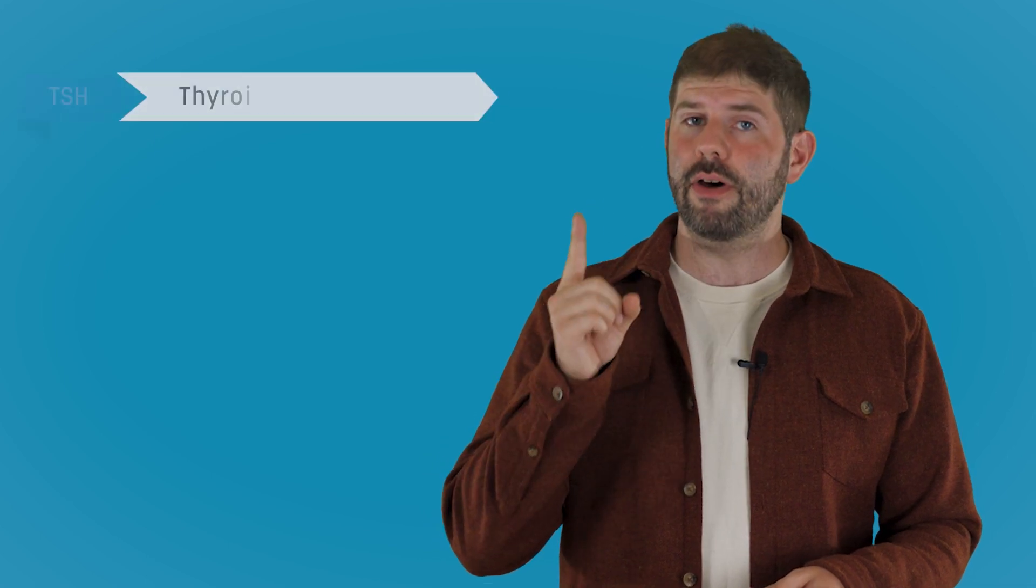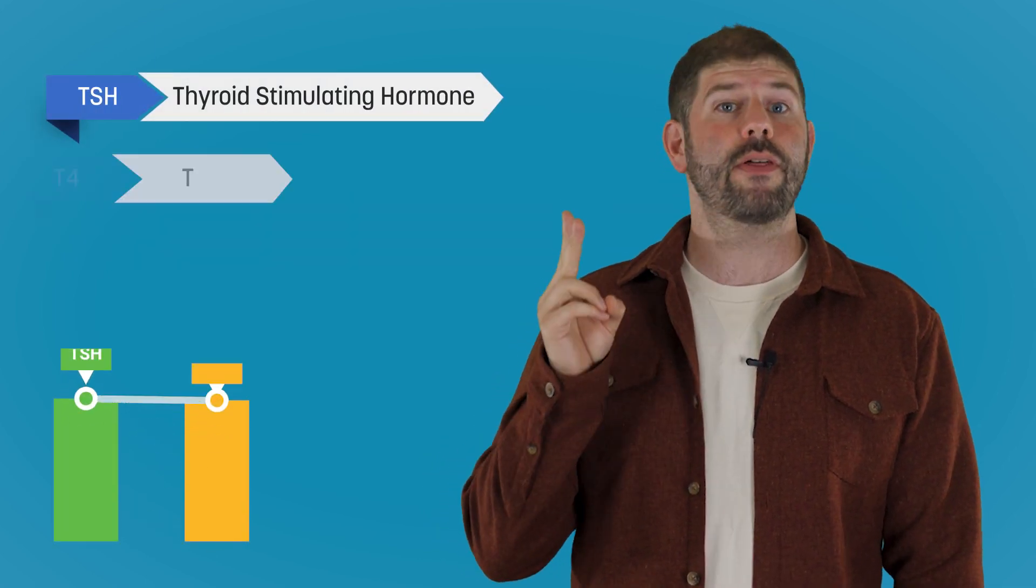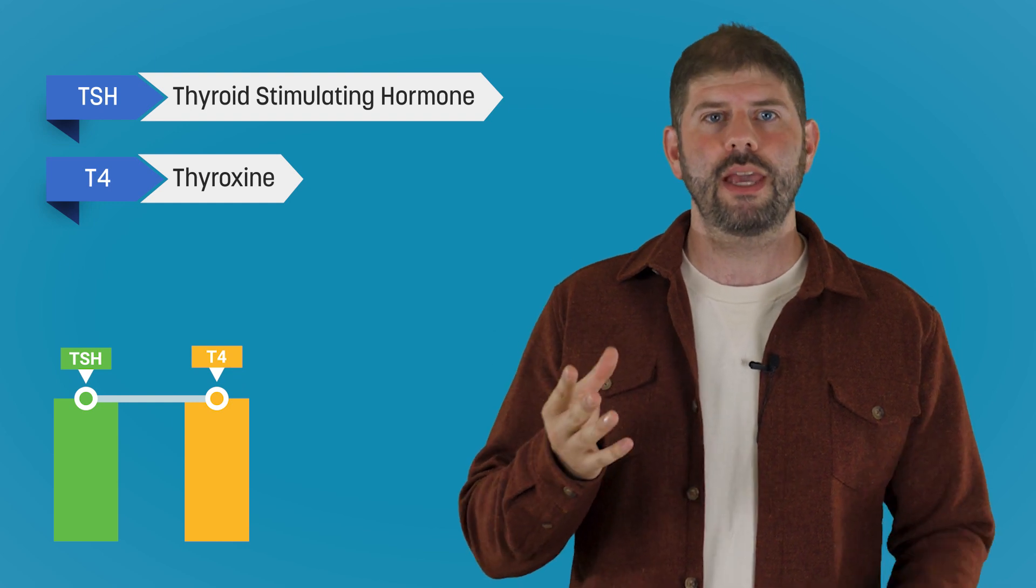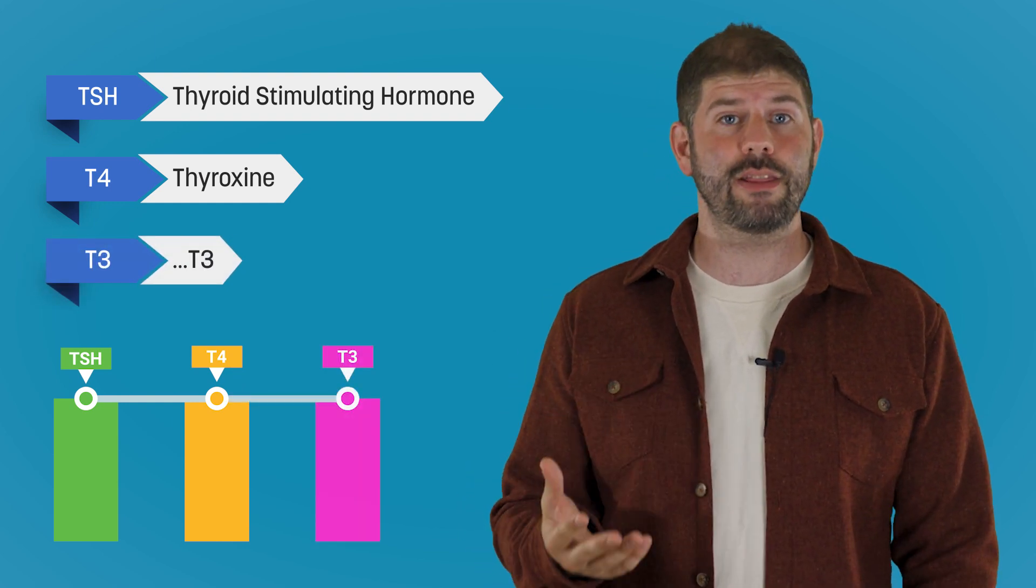In a normal thyroid blood test there are two hormones to look at: thyroid stimulating hormone or TSH, and thyroxine or T4. If you fancy, you might also be able to take a third one called T3.